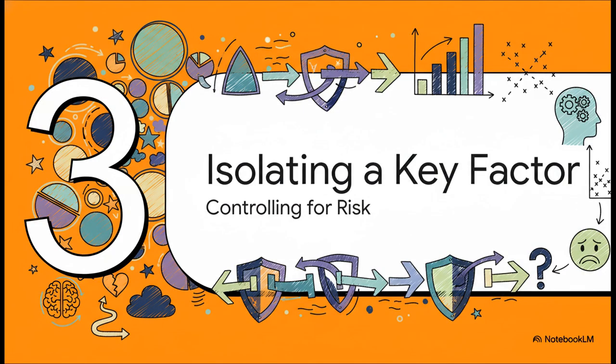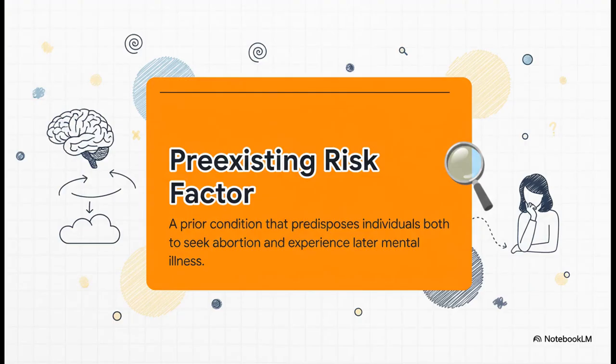Now, here's where things get a little tricky, and it's a classic problem in this kind of research. How do you know if mental health issues that show up later are connected to the abortion, or if they're related to something that was already there before? It's a tough nut to crack, but let's see how this team handled it. This is what scientists call a confounding factor, or a pre-existing risk.